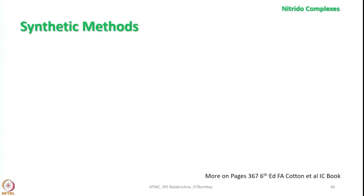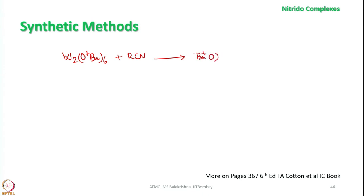Now, let us look into the synthetic methods. For nitrido complexes, usually we are using metals in their high oxidation states. When this tert-butoxy/alkoxy derivative is treated with isocyanide, it forms two complexes: one is a nitride complex and the other one is an alkylidene complex.